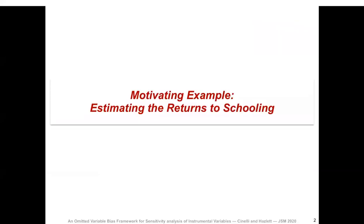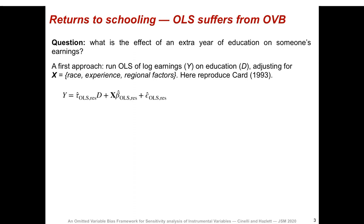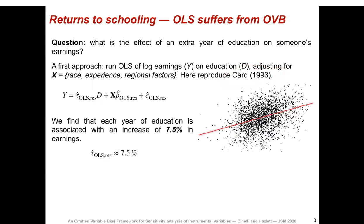To make things concrete, I want to start with a classical example from economics. Our research question is: what is the effect of an extra year of education on someone's earnings? The first approach is to run a regression of log earnings Y on education D, adjusting for some observable covariates X, such as race, experience, and regional factors. Here we reproduce the results of a famous paper from David Card, and we find that each year of education is associated with an increase of 7.5% in earnings.